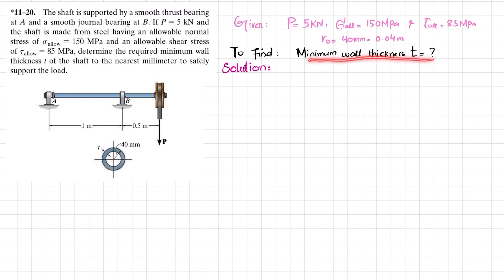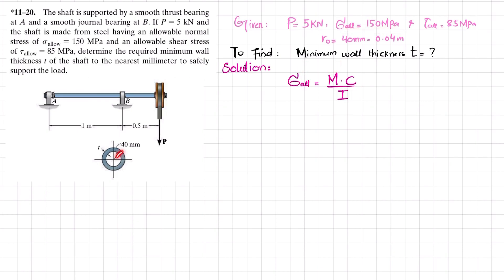The maximum allowable bending stress equals M times c divided by I. Using this formula, we will calculate the thickness. The maximum bending moment will be found from the shear force and bending moment diagram. I will also be calculated based on the outer and inner radii, from which we get the inner radius and then compute thickness t.